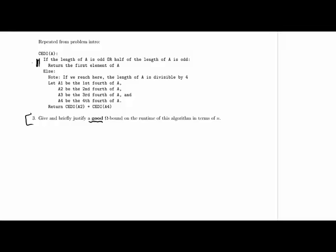Anytime the array length is divisible by 4, we end up making a recursive call. But when the array length is not divisible by 4, we're gonna stop the algorithm right away in constant time.